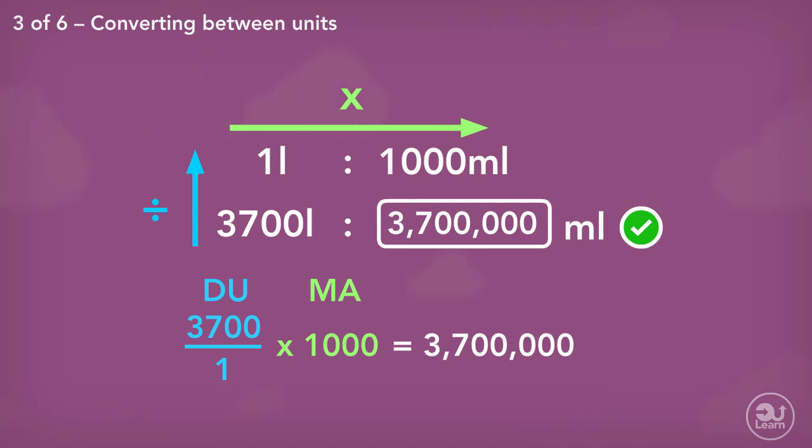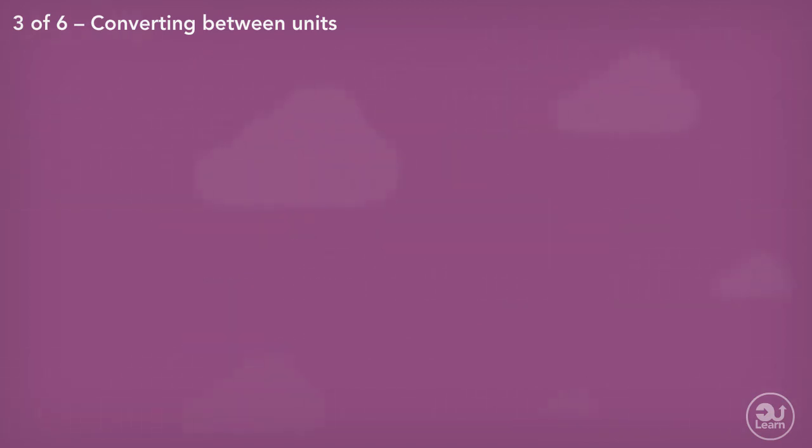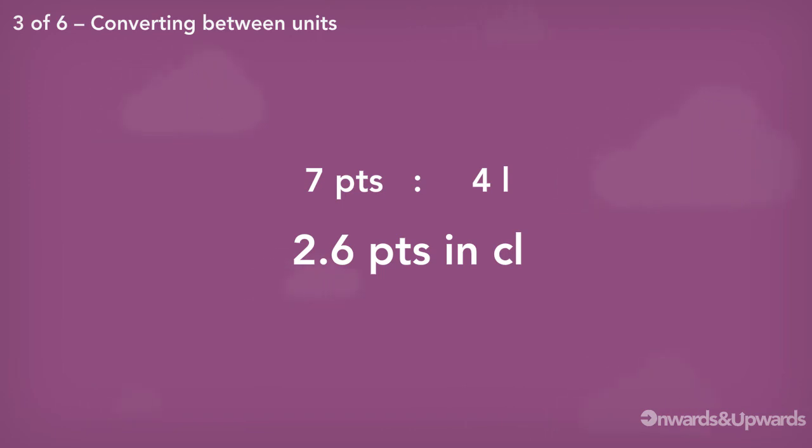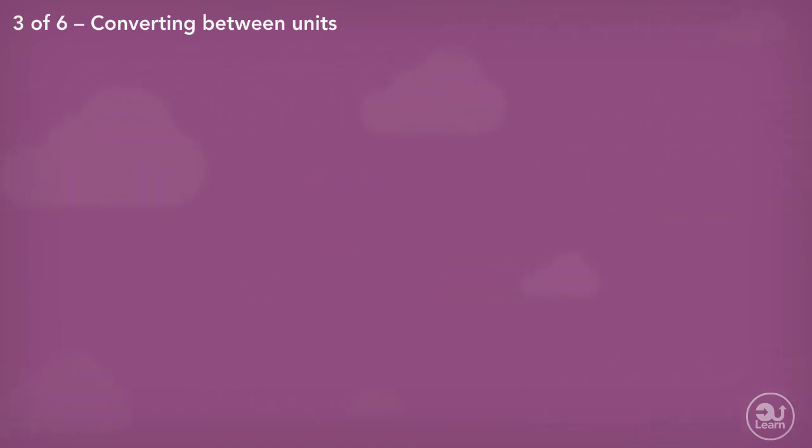Sometimes in questions, you'll be given the relationship between different units. A question such as, 7 pints is approximately 4 litres. Find the amount of 2.6 pints in centilitres. An extra step will be needed for this question, but the setup is still the same. Lay out the information as a ratio like we've been doing before.